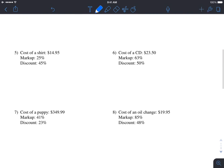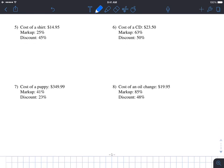Let's jump to number five, where we're doing a markup and a discount. I'll do numbers five and six because seven and eight are the same concept. The cost of a shirt is $14.95, and the markup is 25%. We do 25% of $14.95. In our calculator, 0.25 times 14.95 equals $3.74 if we round. We add $3.74 plus $14.95 to get $18.69. This is the price we would sell to the customer.